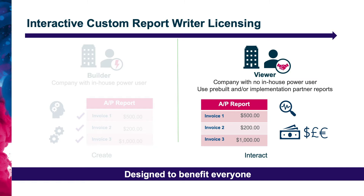In our example today, we're going to start as an accounting manager looking to understand more about the AP accounts — which vendor accounts are outstanding, which ones have the highest balances, and which ones we need to follow up on. We're going to look at that report, make some tweaks to it, and then make our decisions from there.